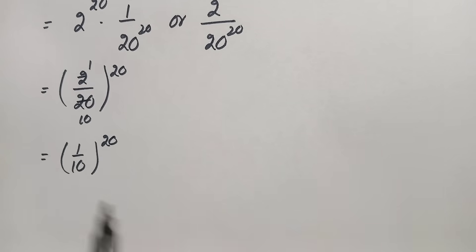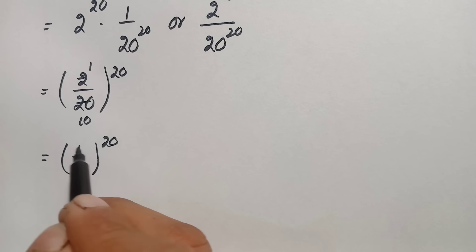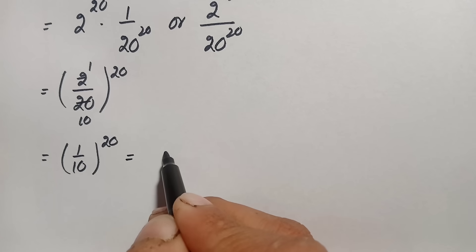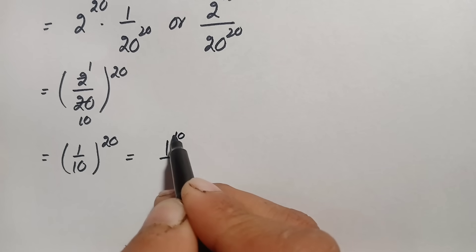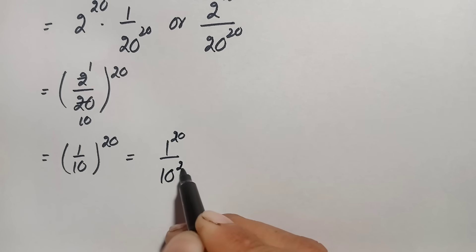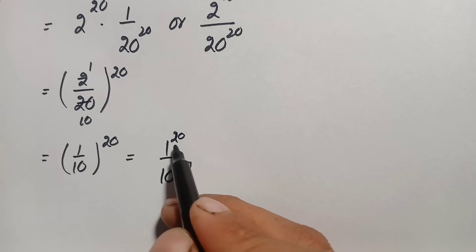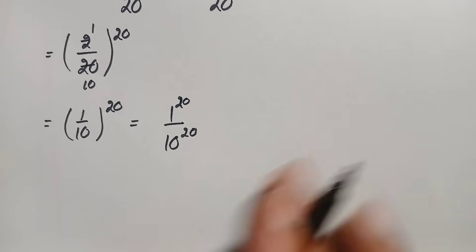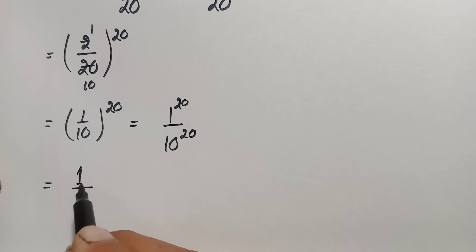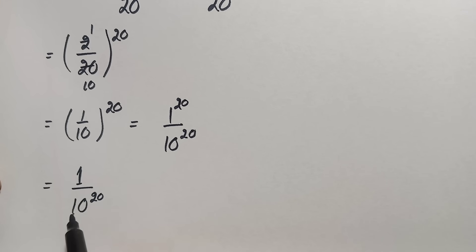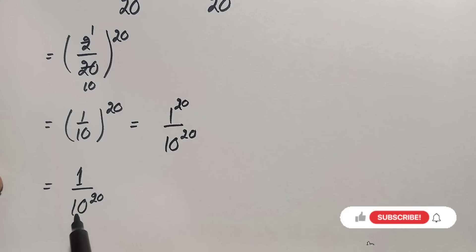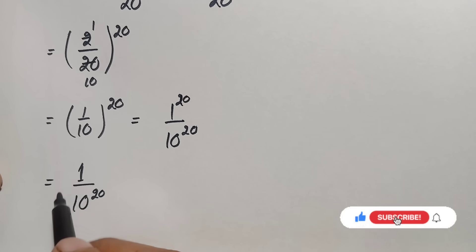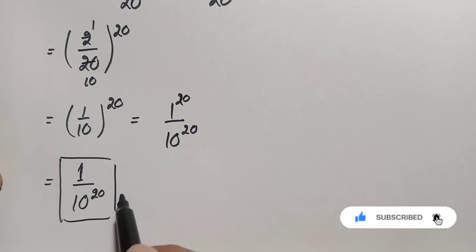Applying the identity once more, we take the power over numerator and denominator: 1 raised to power 20 divided by 10 raised to power 20. Since any power of 1 is always 1, the numerator becomes 1. So the final answer using the second method is also 1 divided by 10 raised to power 20 — a very small number, since 10 raised to power 20 is 1 followed by 20 zeros.